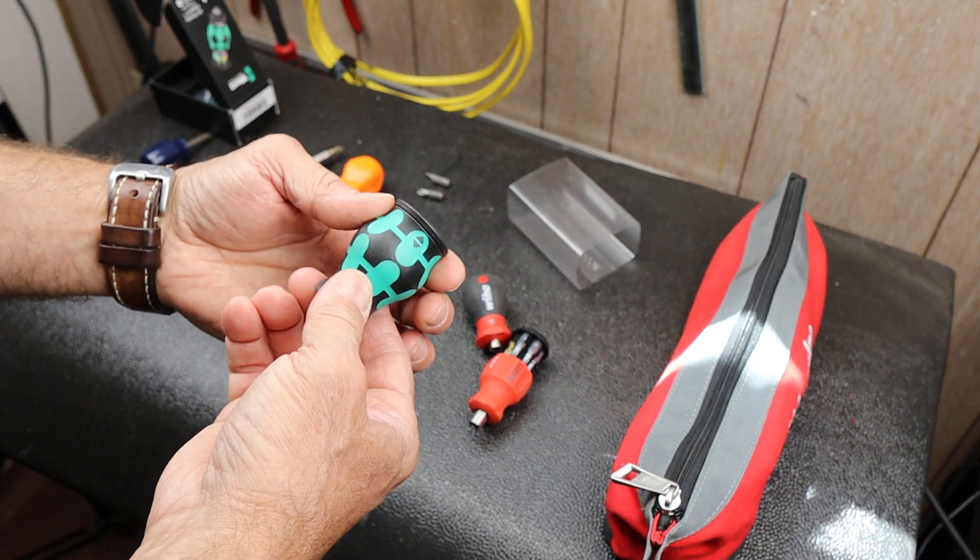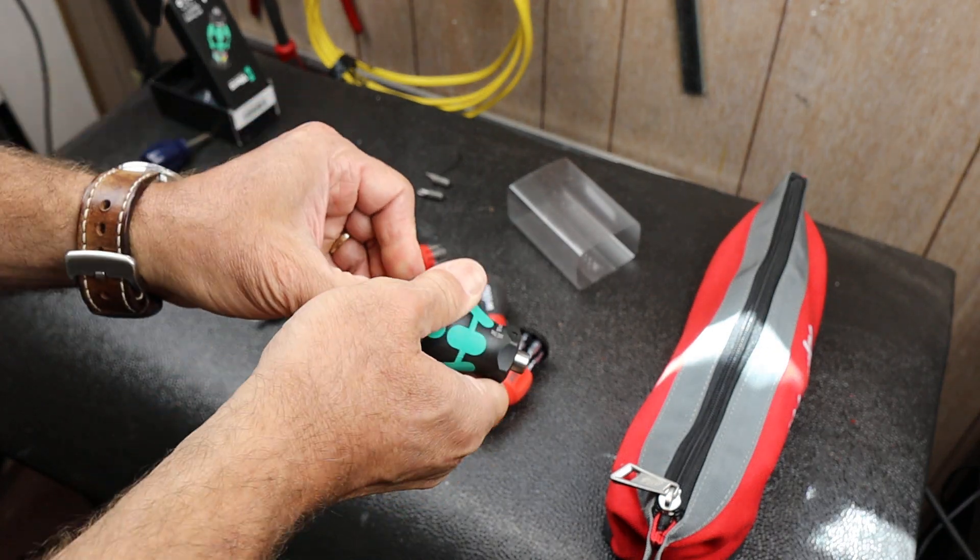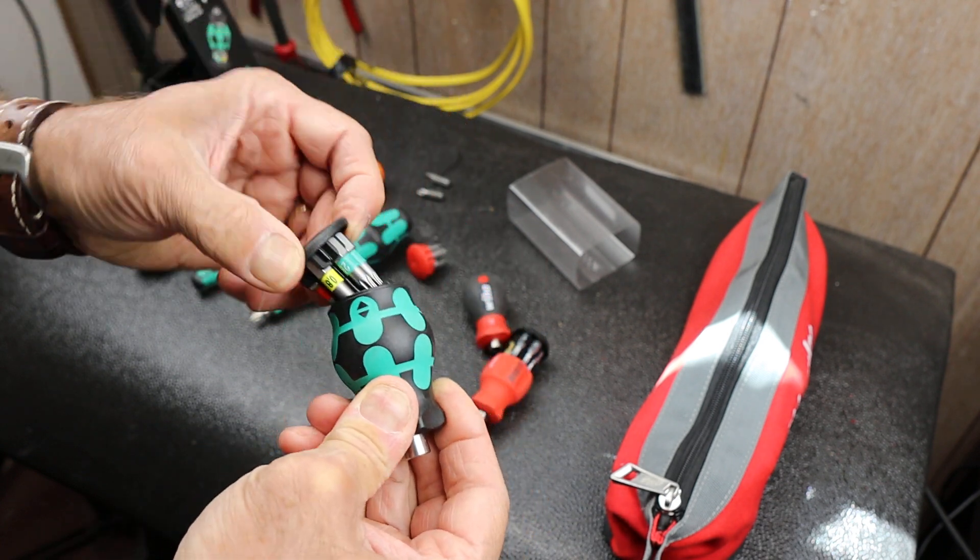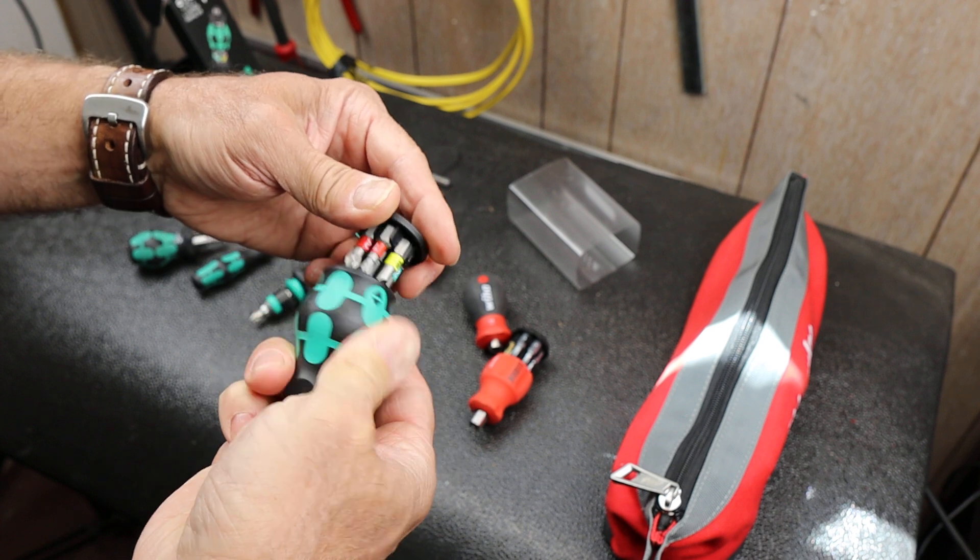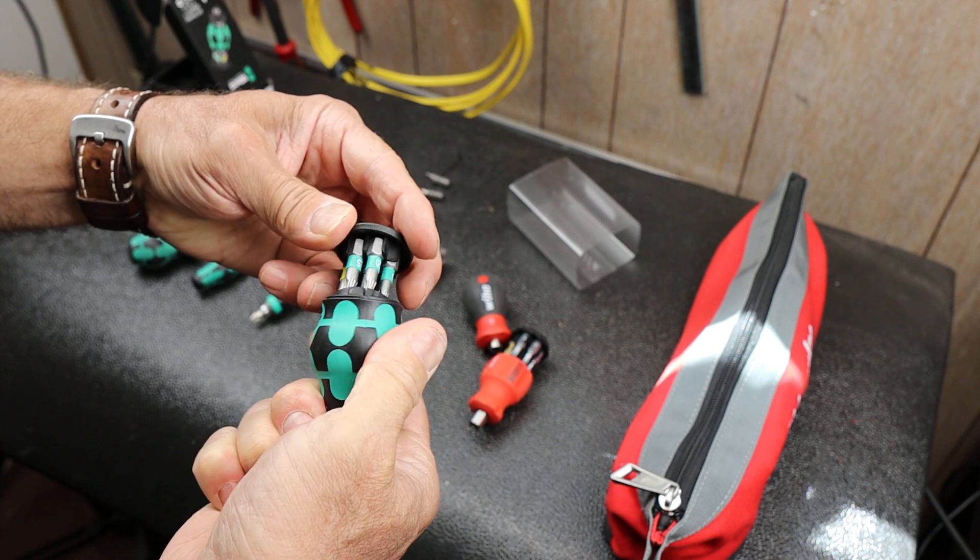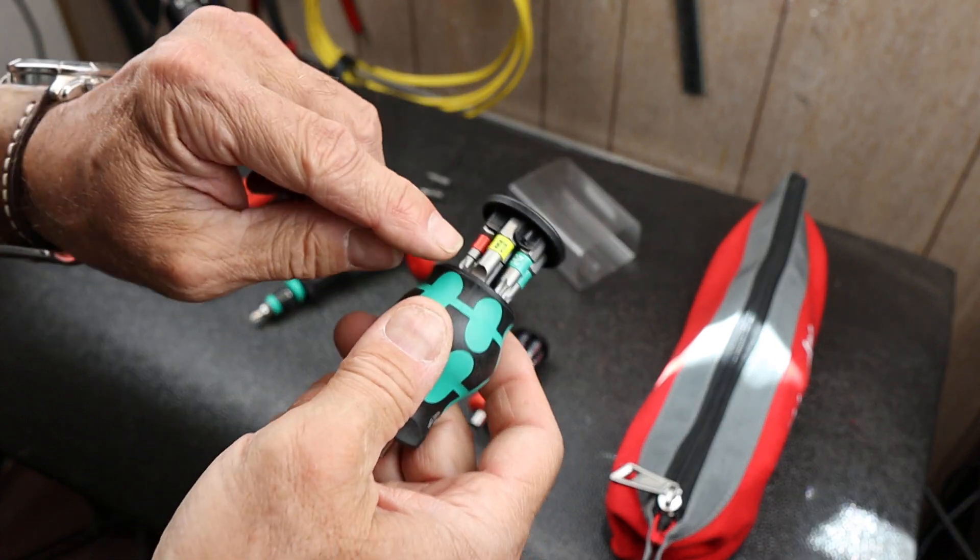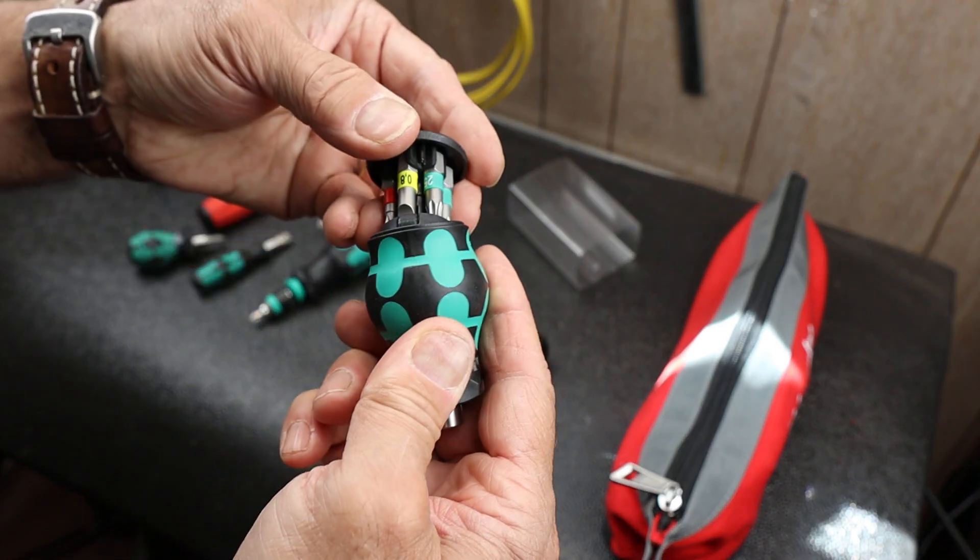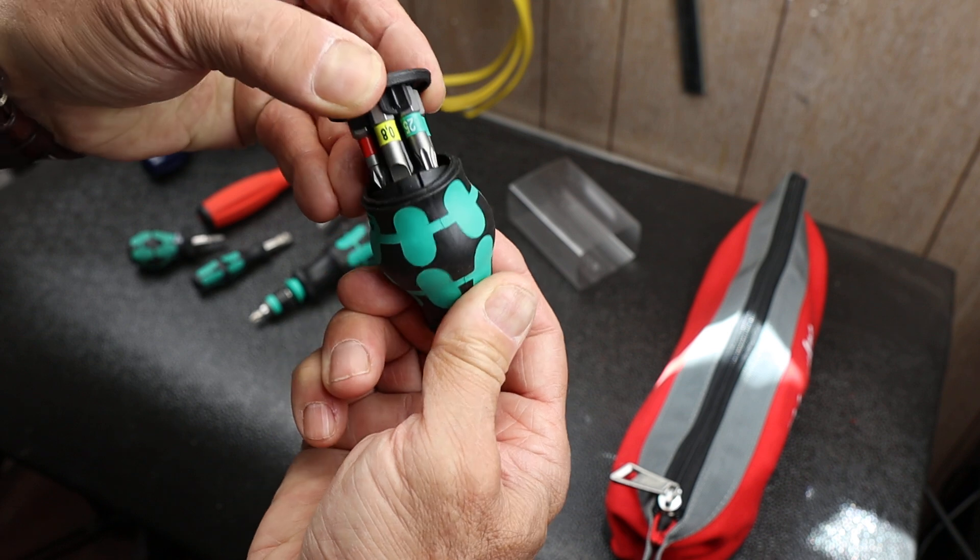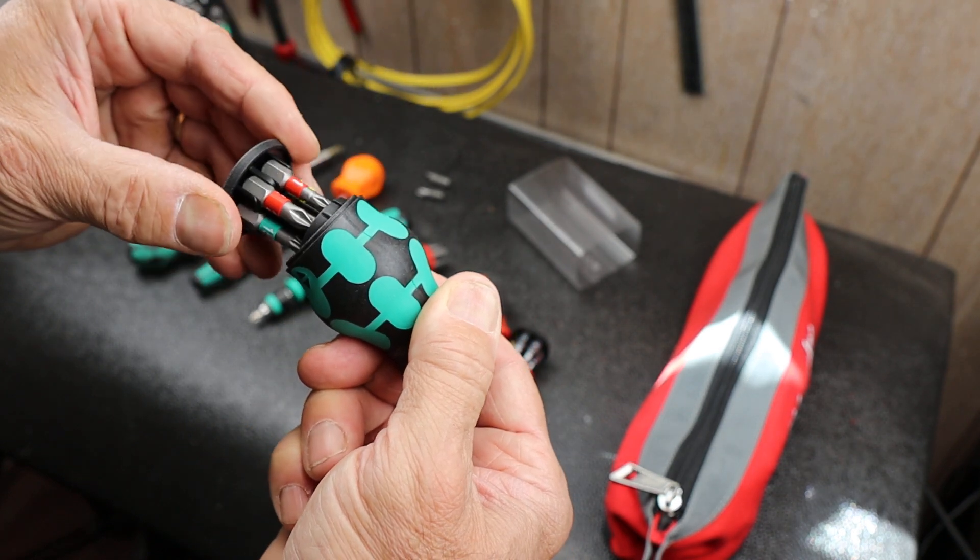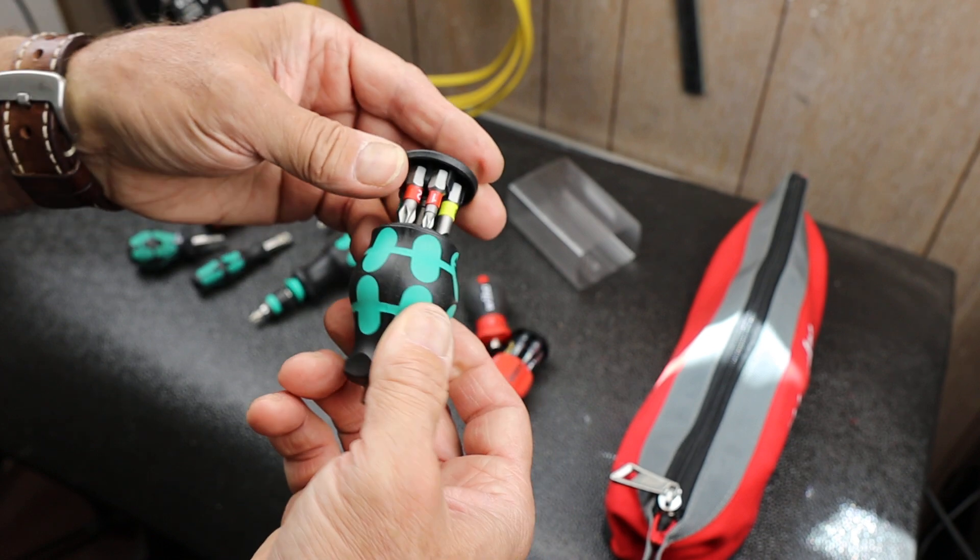What I noticed right away with this Vera is when I pop its lid it swivels, which is kind of interesting. It allows you to view any of the bits that are in here. We've got a slotted, we've got three torques, and then two different Phillips.